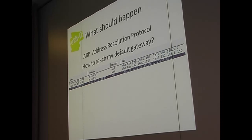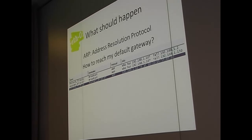Next step: ARP, the Address Resolution Protocol. What is the MAC address connected to my default gateway? You send out a layer 2 broadcast to all MAC addresses in the subnet: who has, for example, 192.168.1.10, if that's my default gateway? If you're lucky, the default gateway replies via unicast with the MAC address. You now know how to get off your local subnet.